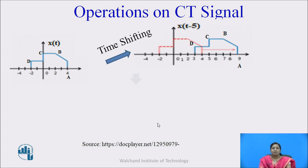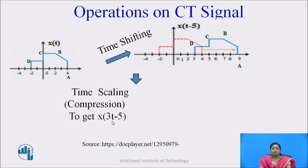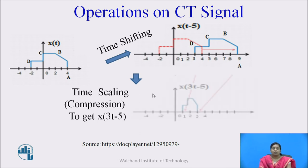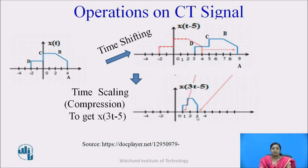For step 2, we need x(3t - 5), so apply time scaling — compression by factor 3 — to the step 1 signal. Point a at t = 9 is compressed to 9/3 = 3. Point b at t = 7 gives 7/3. In this way, the signal is compressed by factor 3.